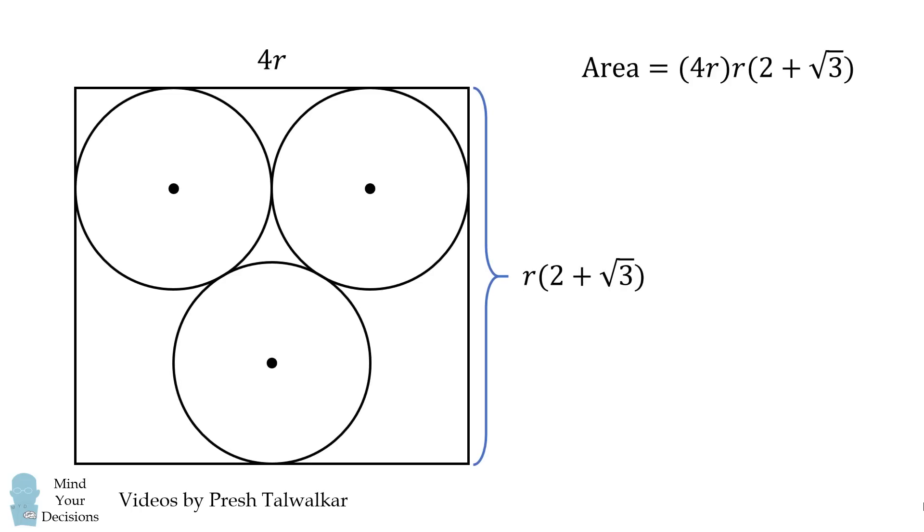We can then calculate the area as the product of these two dimensions. And this gives us our answer of 4r squared multiplied by the quantity 2 plus the square root of 3.